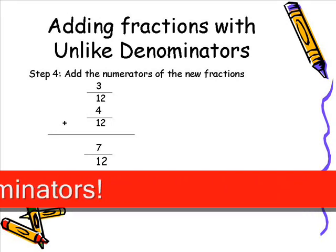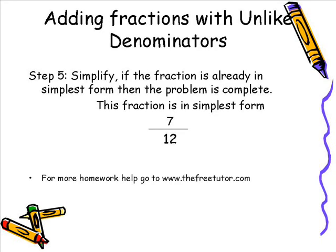Then we proceed to Step 5, which simply states that we simplify our fractions. If the fraction is already in the simplest form, then the problem is complete. As you can see, 7/12 is already in simplest form. And those are the steps for adding fractions with unlike denominators.